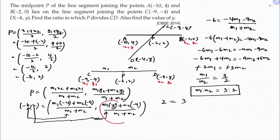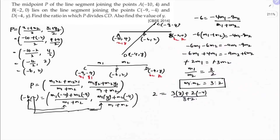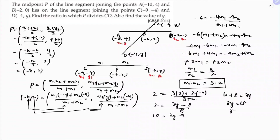Now using m1 = 3 and m2 = 2, equate the ordinate: 2 = (3·y + 2·(-4)) / (3 + 2) = (3y - 8) / 5. Cross-multiplying: 2 × 5 = 10 = 3y - 8. So 10 + 8 = 3y, giving 3y = 18, therefore y = 18/3 = 6.